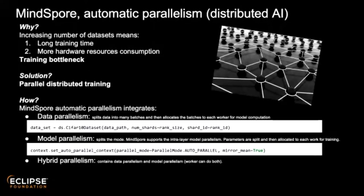Another level is model parallelism — when executing and training a model, you specify the number of parallel instances you want. Finally, you can combine both in a hybrid approach, where MindSpore spreads both the dataset and the model training altogether. This is very powerful and dramatically reduces training time.